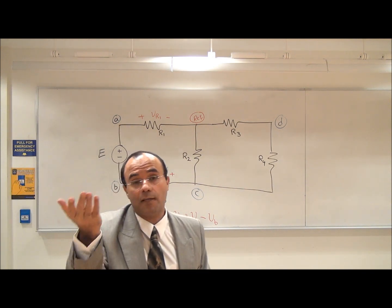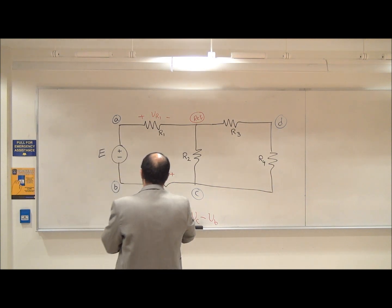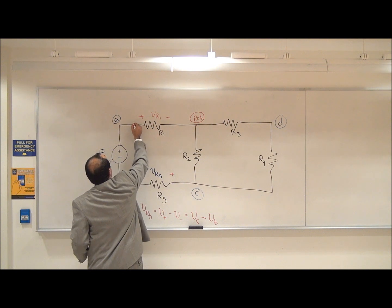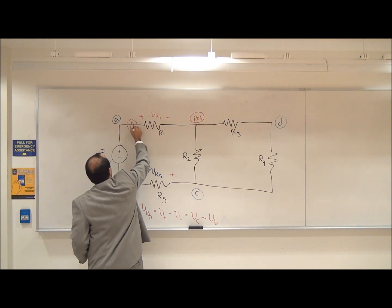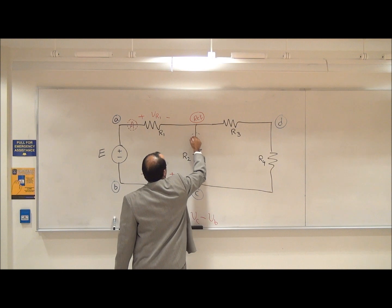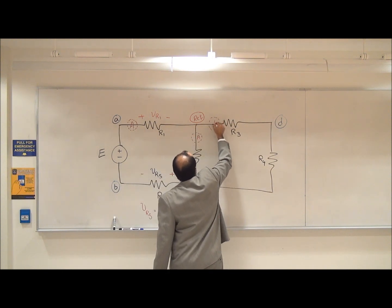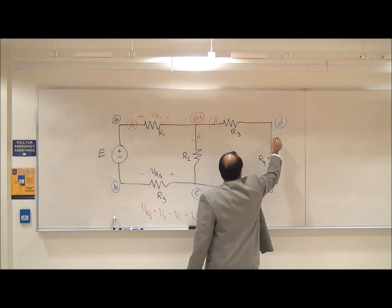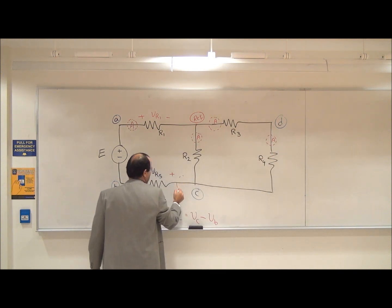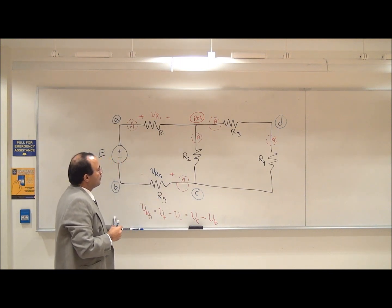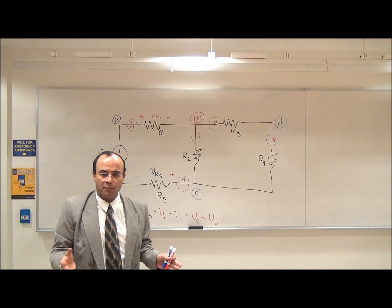To measure the currents, it's very easy. You need to make sure that the ammeter is in series. So for example, you cut the line and put the ammeter there. You cut this line and put the ammeter here. It goes on like that because you need to find the current of each component — you cut the line and put the ammeter. That's how the measurement is done.